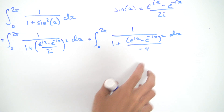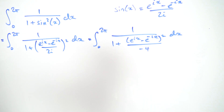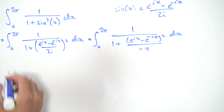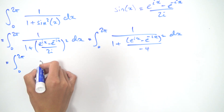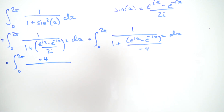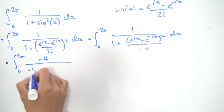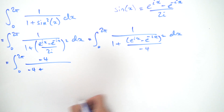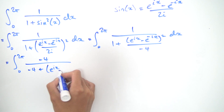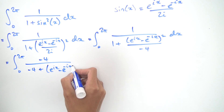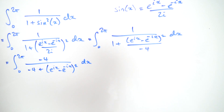Next, to get rid of this minus 4 on the denominator — it's a bit ugly having fractions inside fractions — we multiply the top and the bottom by minus 4. Multiplying the top by minus 4 gives minus 4, and multiplying the denominator: the minus 4 cancels with the other minus 4, leaving us with the integral from 0 to 2π of minus 4 over minus 4 plus (e to the ix minus e to the minus ix) squared, integrated with respect to x.